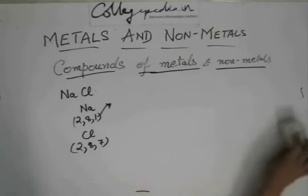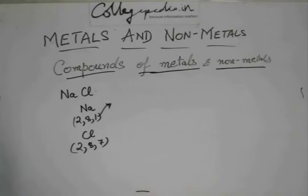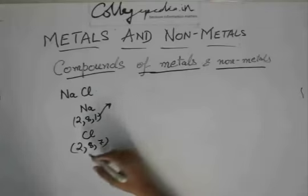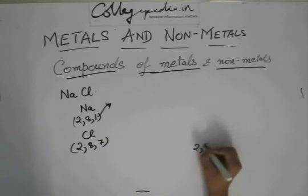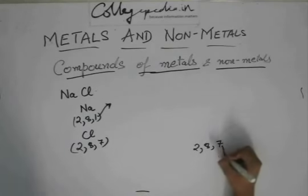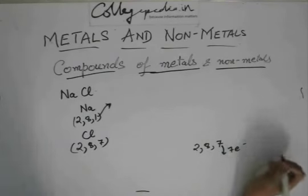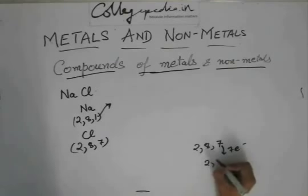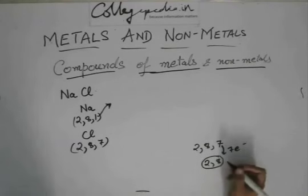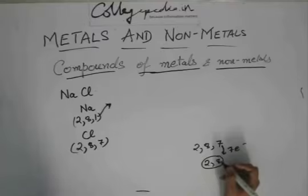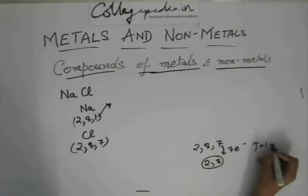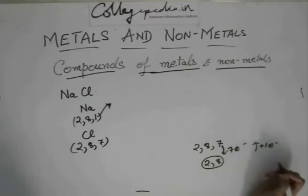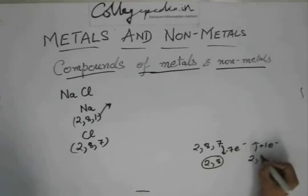On the other hand, chlorine has a configuration of 2, 8, 7. So, one possibility can be it donates these 7 electrons to make 2, 8, which will be a stable octet because there are 8 electrons in its outermost orbit. On the other hand, it can accept 1 electron and become 2, 8, 8.